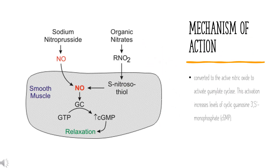Mechanism of Action: Isosorbide mononitrate acts as a prodrug for nitric oxide (NO), a potent vasodilator gas released when the drug is metabolized. NO activates soluble guanylyl cyclase in vascular endothelial cells, which increases intracellular concentrations of cGMP. cGMP activates cGMP-dependent protein kinases, such as protein kinase G, which activates downstream intracellular cascades.